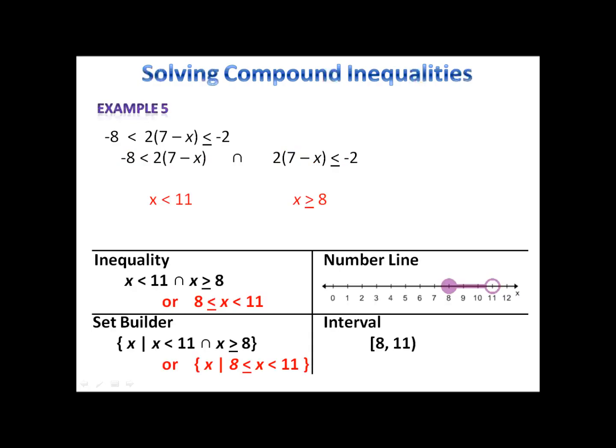Written as an inequality we have x is less than 11 intersected with x is greater than or equal to 8, or we could write it as a single statement. We could take either of those and put them into the set builder package. Because we have an intersection, we have the points from 8 up to 11 — closed circle at 8, open circle at 11, with the area in between shaded. Finally, interval notation with a bracket on the 8 and a parenthesis on the 11.